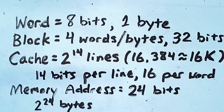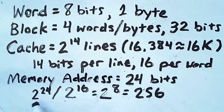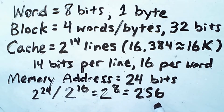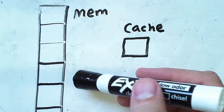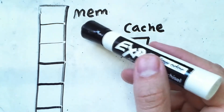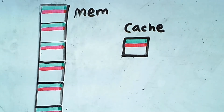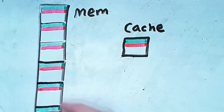So which blocks of memory go in the cache? If we divide the 2 to the 24 bytes in memory by the 2 to the 16 bytes of the cache, that leaves us with 2 to the 24 minus 16, which is 2 to the 8, which is 256. So memory is 256 times larger than the cache. In other words, we can break memory into 256 distinct cache-sized chunks. Here is a zoomed-out view of a portion of memory and the cache, and you can see that the memory is broken up into several cache-sized chunks. I've highlighted the first line of each chunk in green and the second line of each chunk in red, and done the same in the cache.